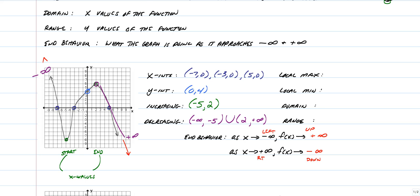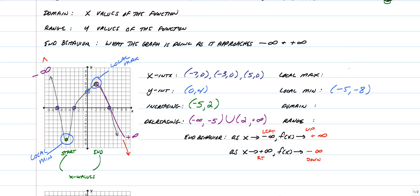The last thing we have to cover are maxes and mins. Maxes and mins would be the top or the bottom of a graph. So this is the bottom — that's a turn — so that would be a local minimum. A local minimum would be at the coordinate negative five, negative eight. We also have a local maximum at the top of a turn, so at the top we have two comma six.